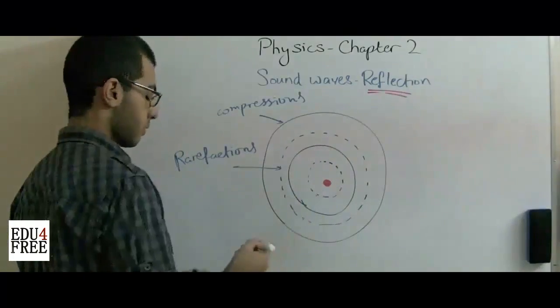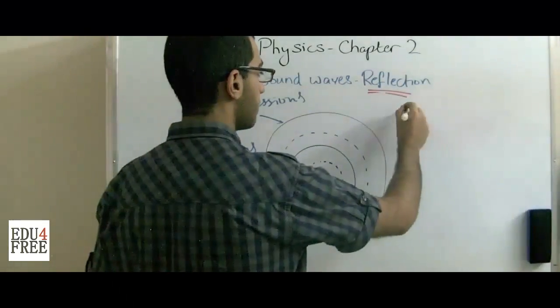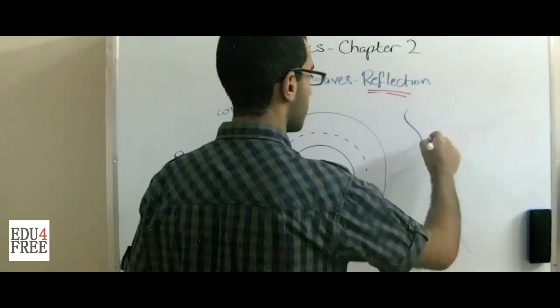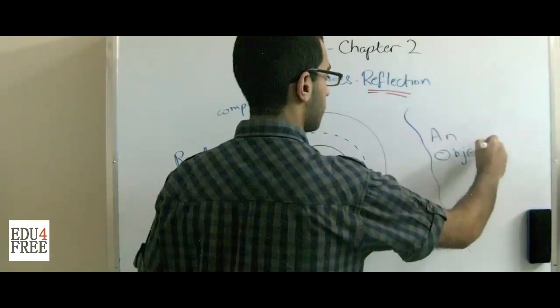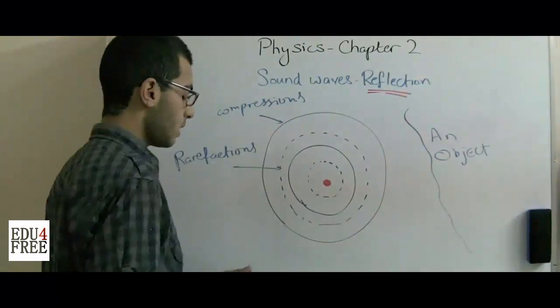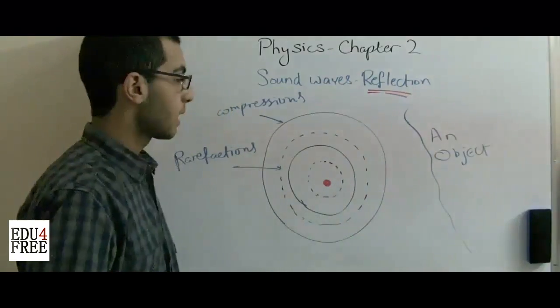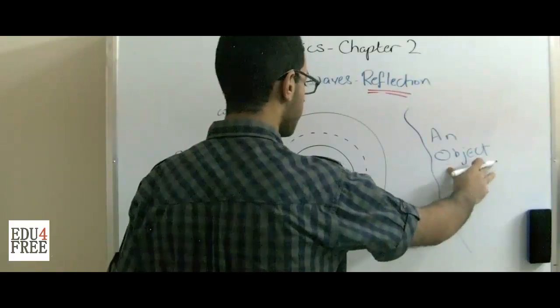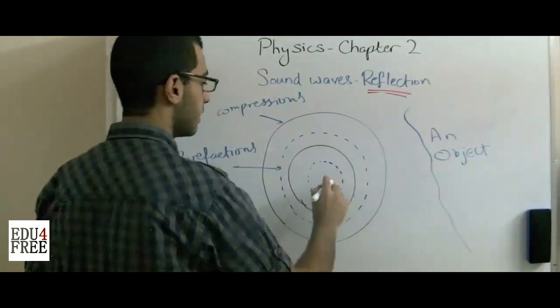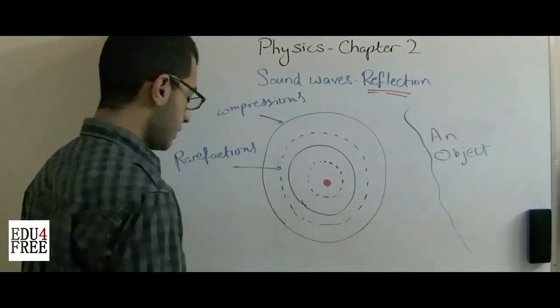When these concentric circles hit an object, for example here, there is an object, the waves are reflected as if they are destined from this object the same distance they are far from the vibrating source.